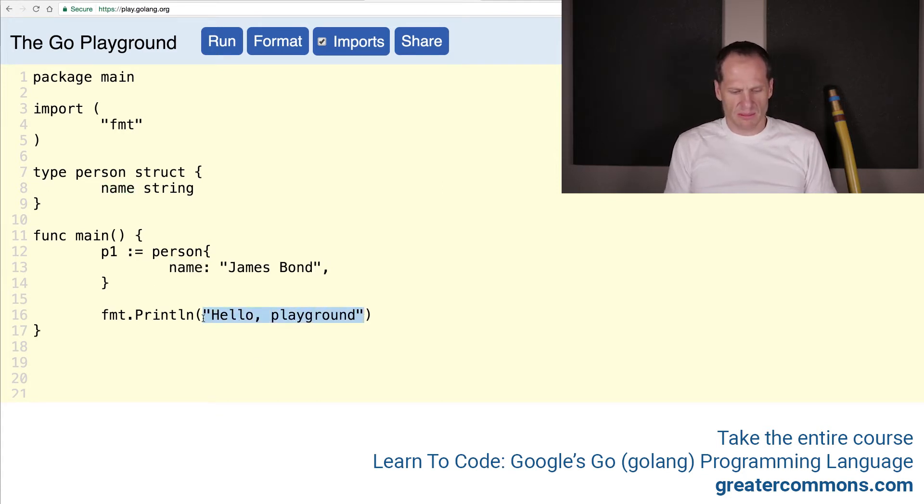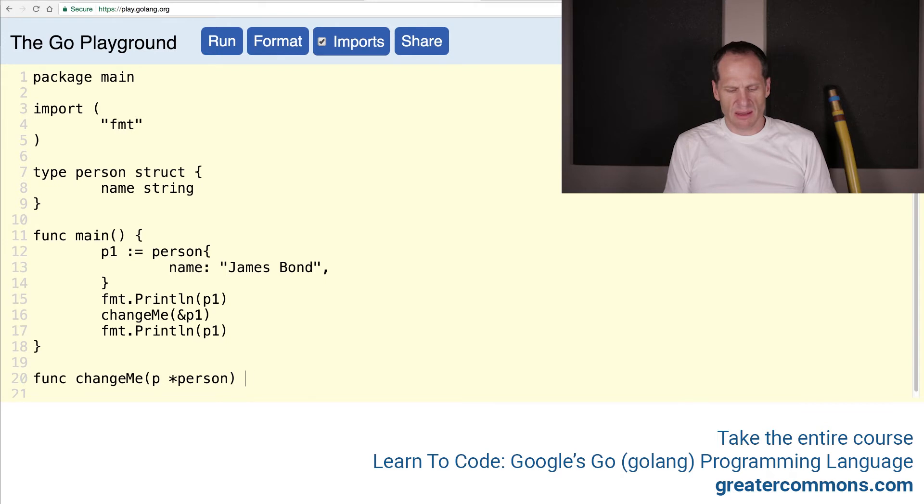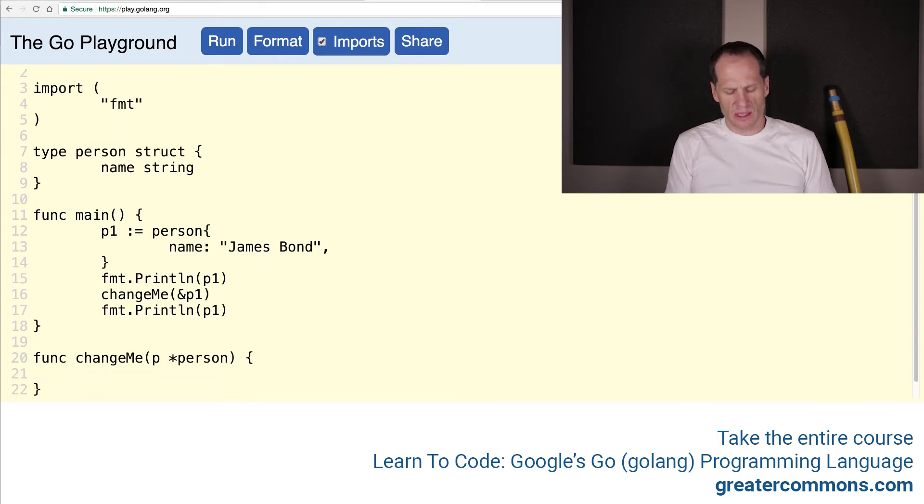And then we could print out James Bond p1. And we're going to double that. Copy, paste, paste, because we are going to call a function called changeMe. And we're going to pass in the address of p1. Because we want changeMe, func changeMe, to take in a pointer to a type person, a pointer to type person. And then what we're going to do is we will have p, and it will be first. And we're going to set that to Miss Moneypenny.